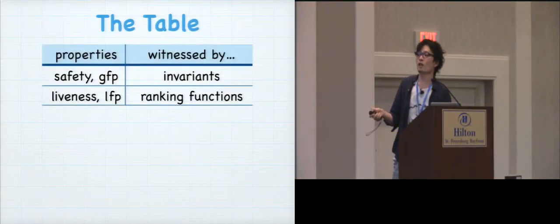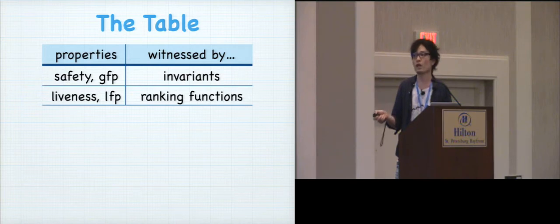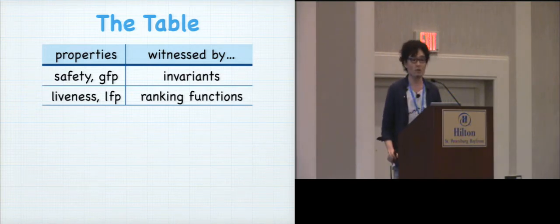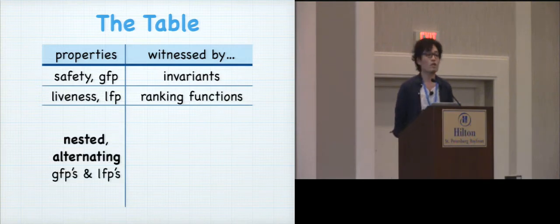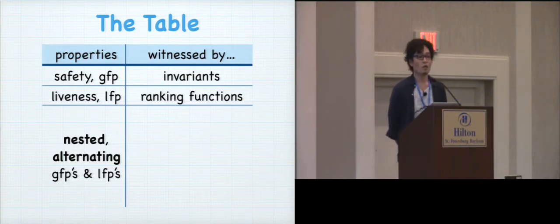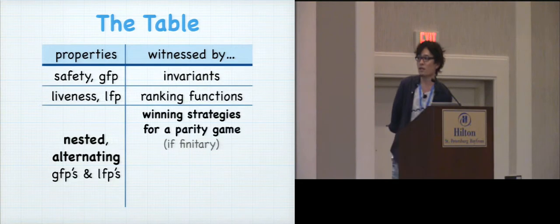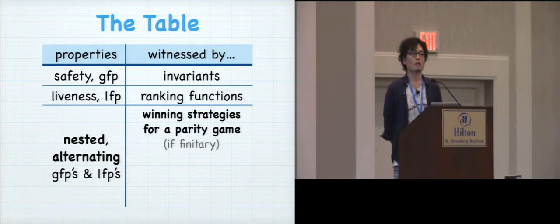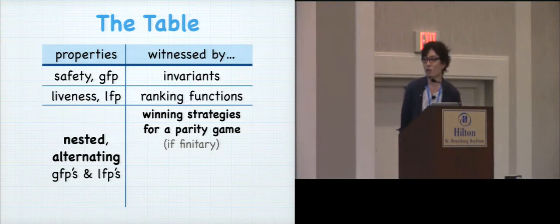Okay, so we have seen that safety properties are witnessed by invariants, and to establish liveness properties, least fixed points, you would use ranking functions. This is all normal. And then the question is, what about nested, the combination of these two? Nested alternating greatest and least fixed points. And you probably know already the answer, the common answer is winning strategies for a parity game.